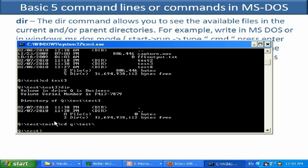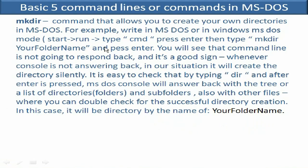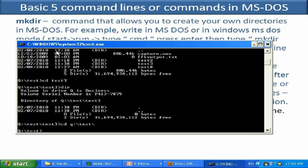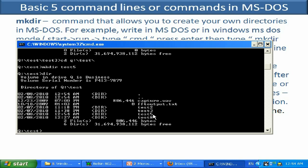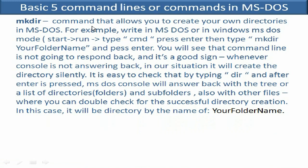Next, let's discuss how to make a new directory using the MKDIR command. In the test folder, I want to create a new folder called 'test5'. I type MKDIR, space, then 'test5' and press Enter. Nothing appears to happen, but that means it was created successfully. Type DIR to verify — and test5 is right there. Always check after creating.